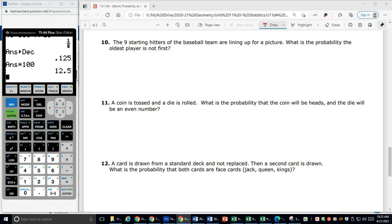The nine starting hitters of the baseball team are lining up for a picture. What is the probability the oldest player is not first? So I want the probability that the first player we're going to choose is not the oldest player that comes first.